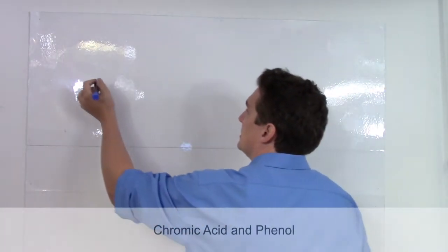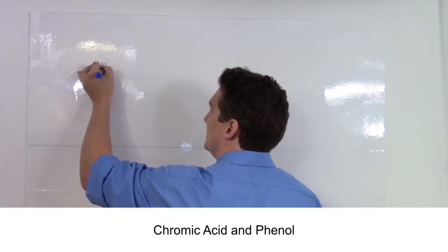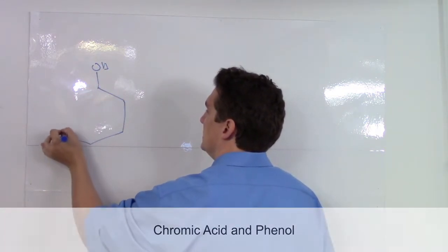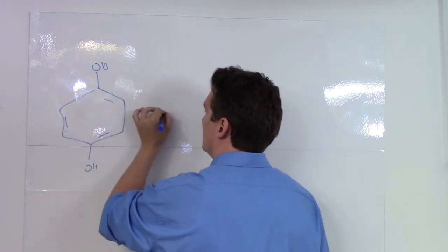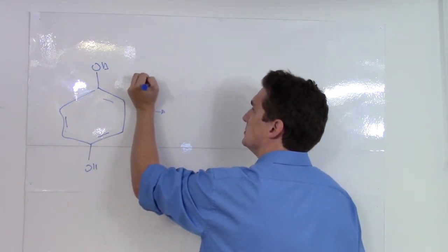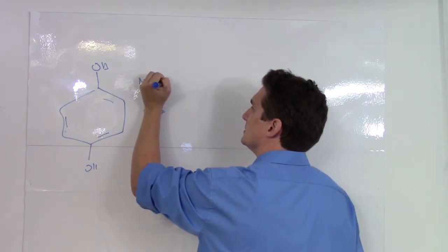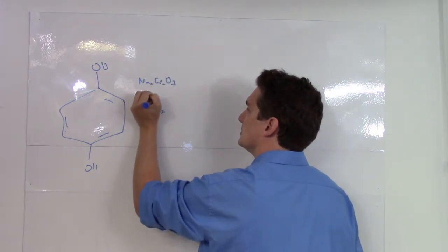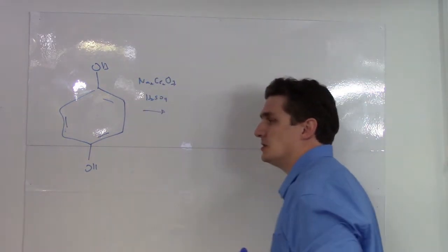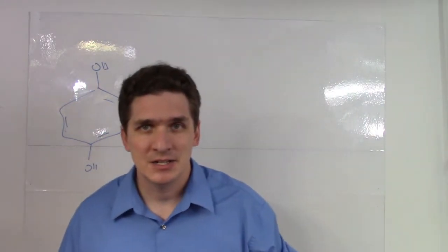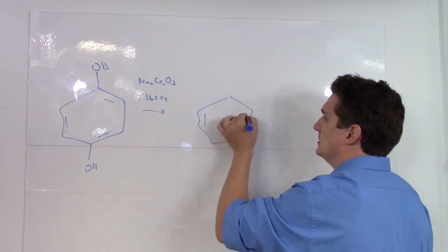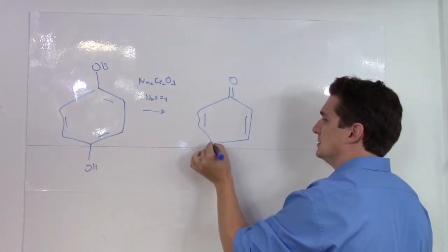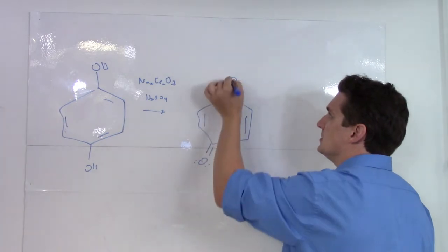And the reaction we're talking about is the reaction with chromate. So if we run our typical oxidation reaction, what we're going to end up doing is converting all of our alcohols here to ketones.